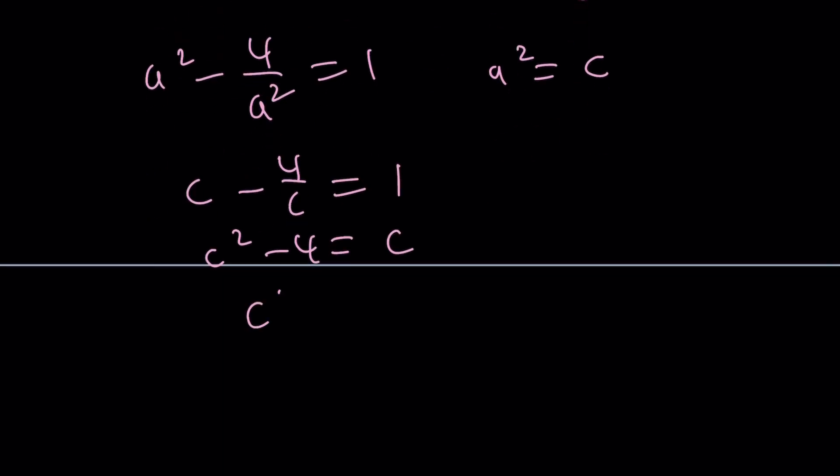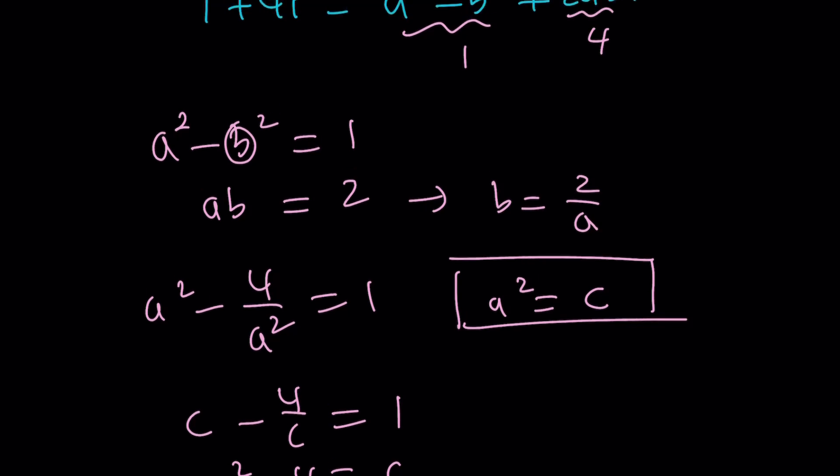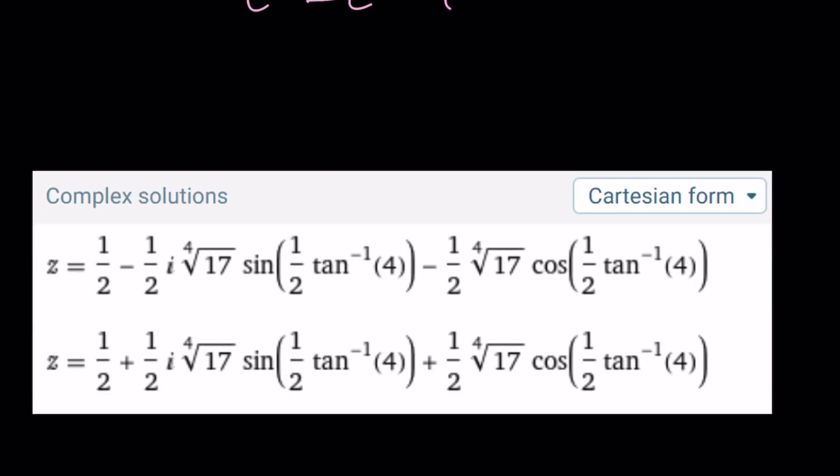And then from here, we get c minus 4 over c equals 1. c squared minus 4 is c, and then solve for c, and you're going to get the solutions. And then a squared equals c by square rooting it. And of course, a, b, c are real, right? Because they are the real and imaginary parts. But this is a long story. And this brings us to the result, and these are the complex solutions.